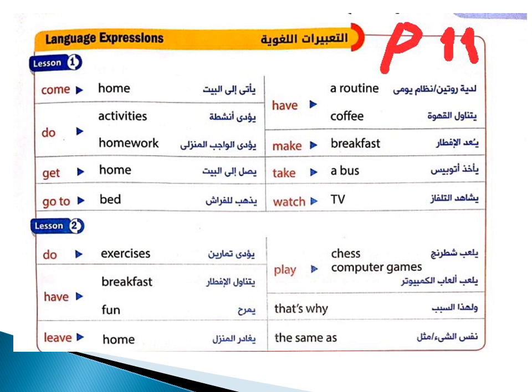ذاتس واي - ولهذا السبب. تو سي، وي بيكوز - نفس الشيء. ذا سيم آز - نفس الشيء. سيميلار تو - مشابه لي.